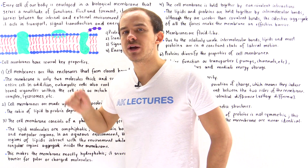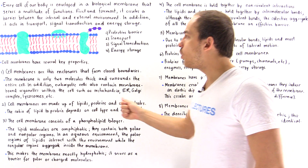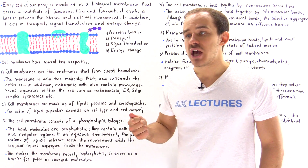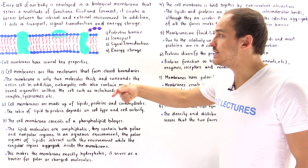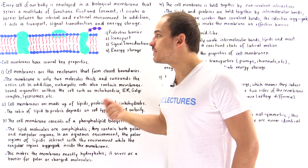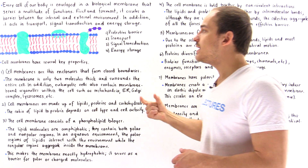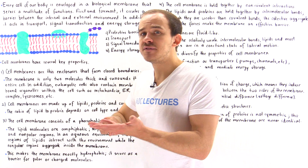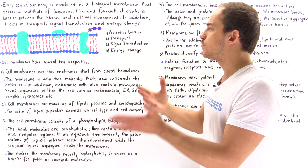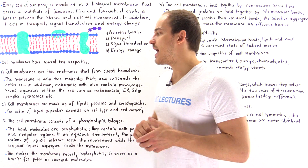Property number two: cell membranes are made up of not only lipids, but also proteins and carbohydrates. The additional proteins and carbohydrates diversify the functionality of the cell membrane. Depending on the type and activity of the cell, the ratio of lipids to proteins to carbohydrates varies.